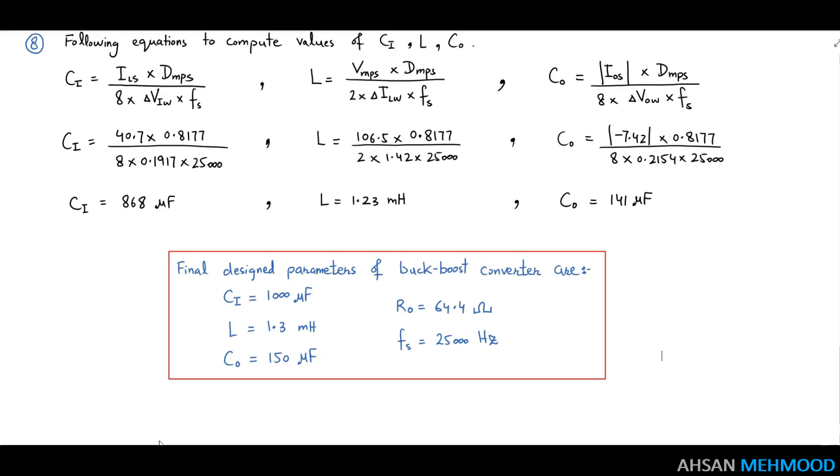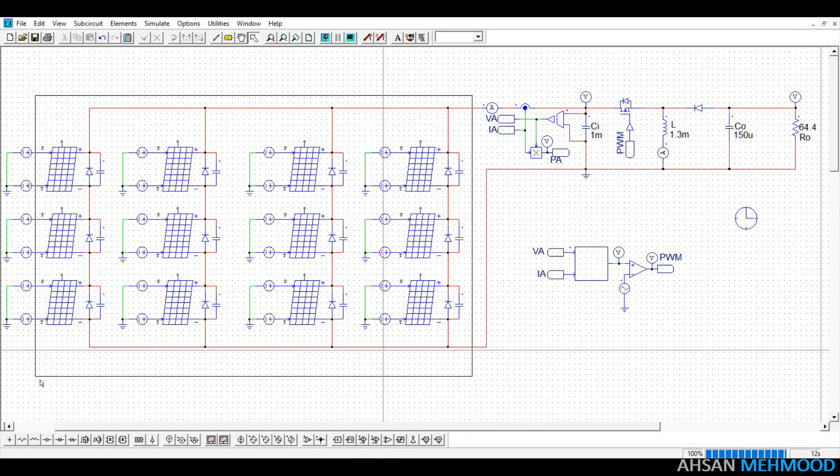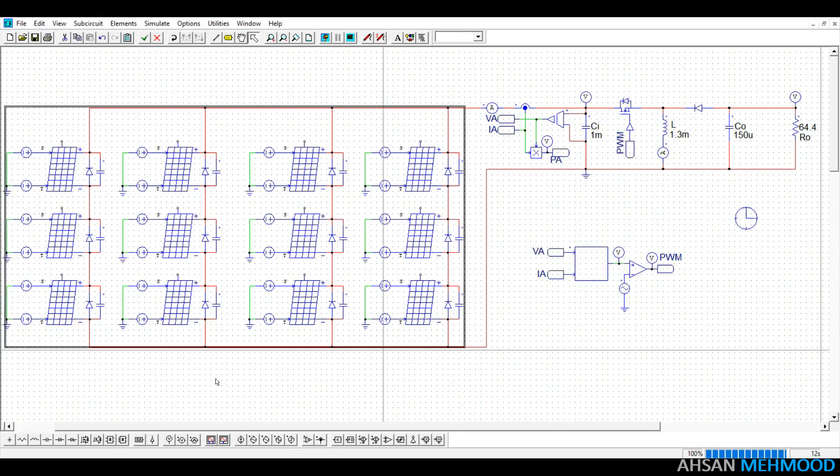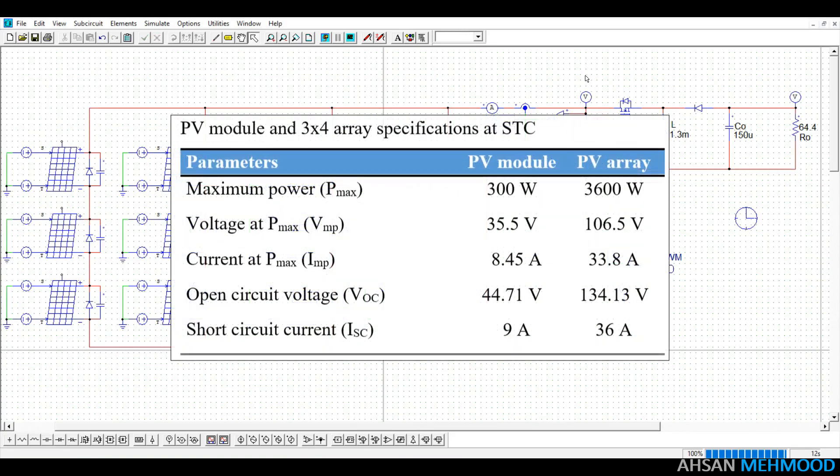The buck boost converter design is now complete and we will go to simulation to see if the design parameters produce the desired results or not. I am going to utilize the PSIM software for this and I have generated a 3x4 PV array with the identical specifications that we use to design our buck boost converter's parameters. On the screen the full specifications of each PV module and the overall array are displayed.